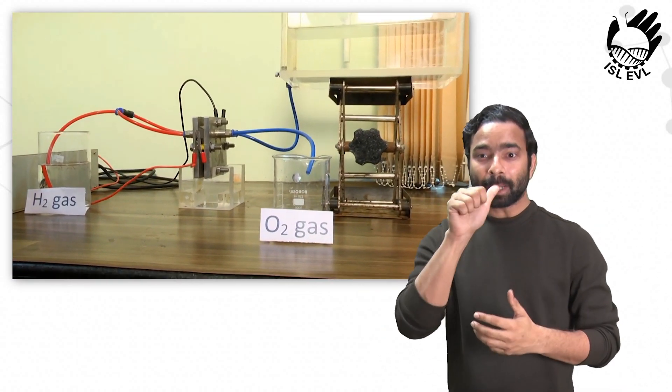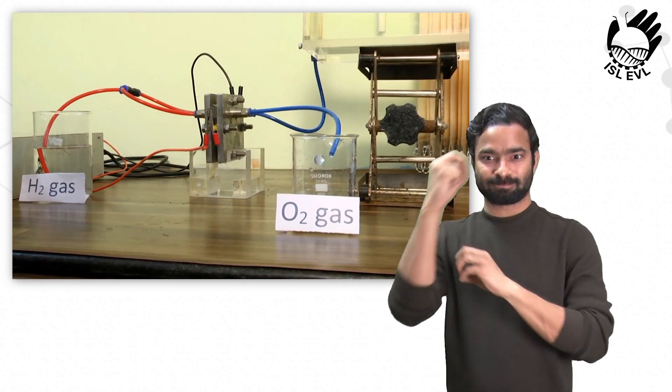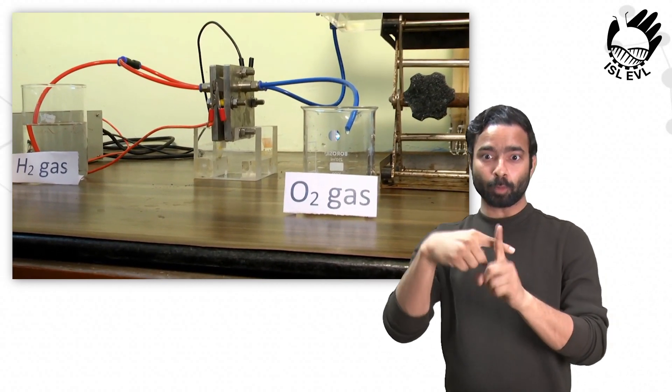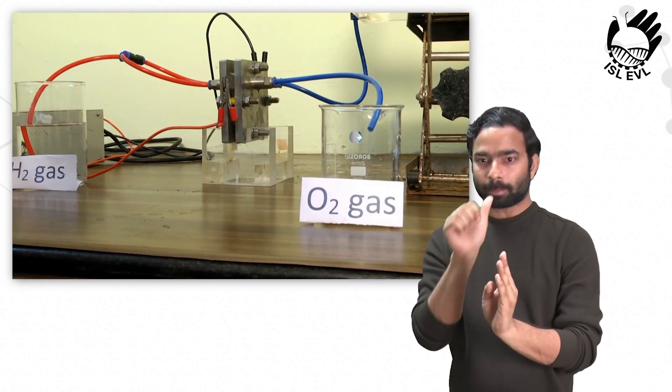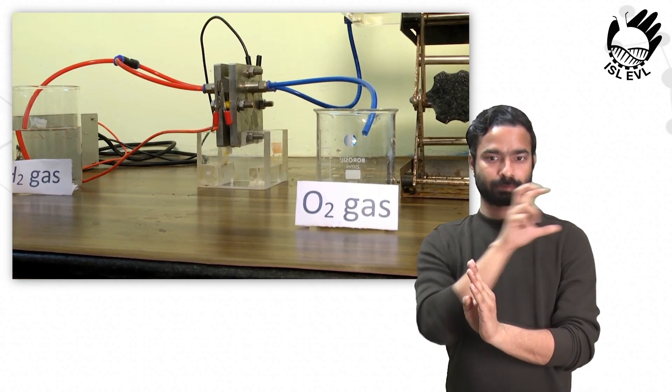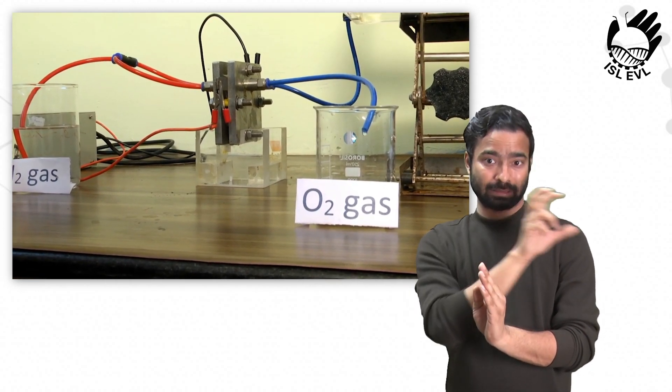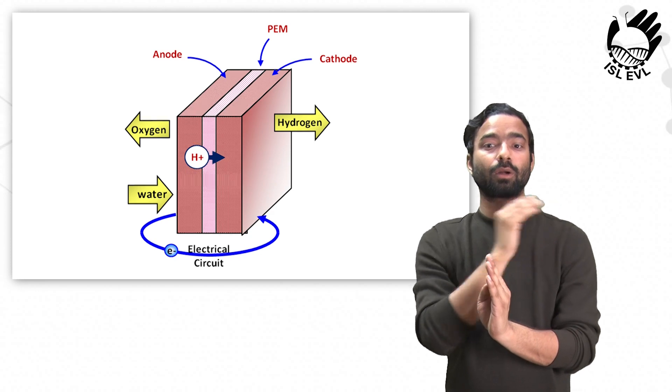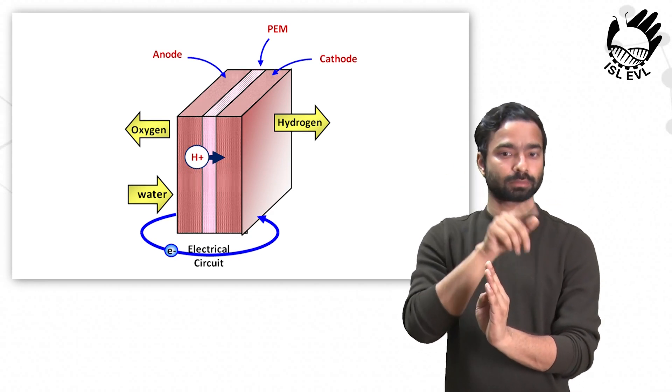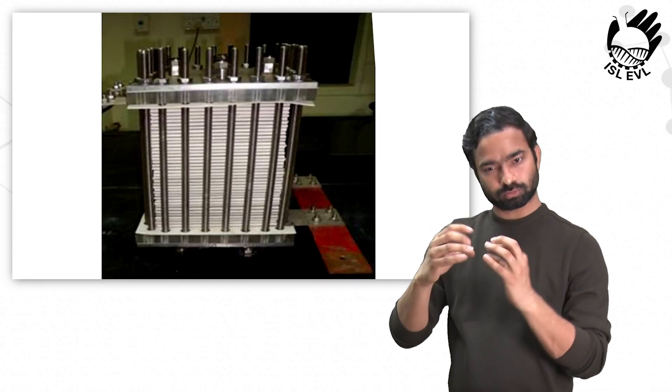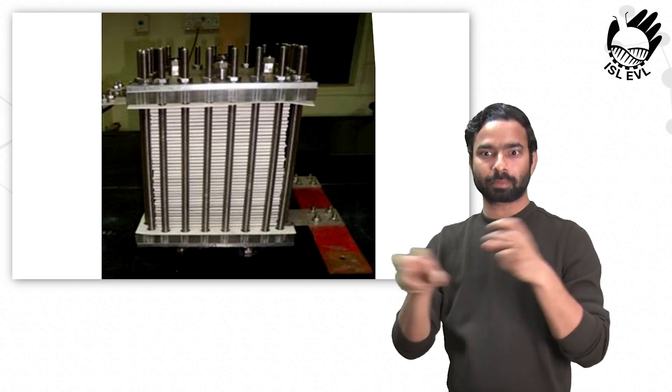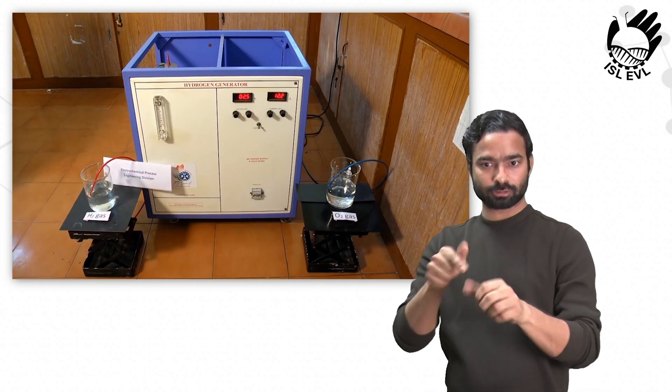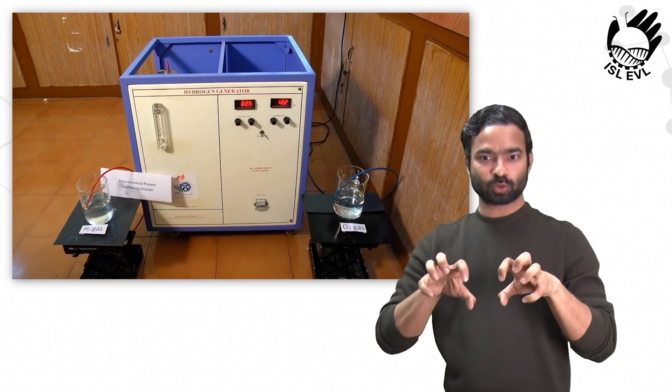Here, the deionized water of resistivity 18 mega ohm is supplied from the water tank to the anode side flow channels of the electrolyzer. The electrolyzer is externally connected to the DC power supply. The water splitting reaction occurs and the hydrogen and oxygen gases are produced. The single cells are assembled in series to make a cell stack for the production of high volume of hydrogen and oxygen gases.